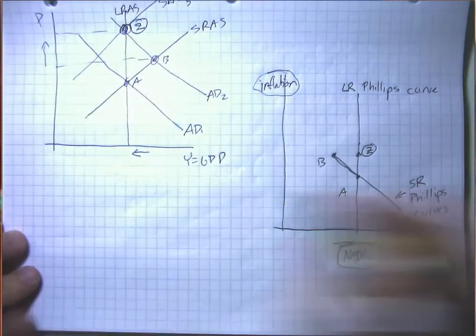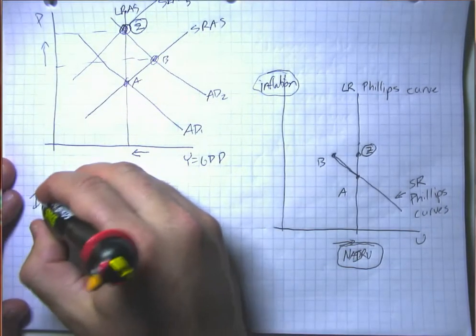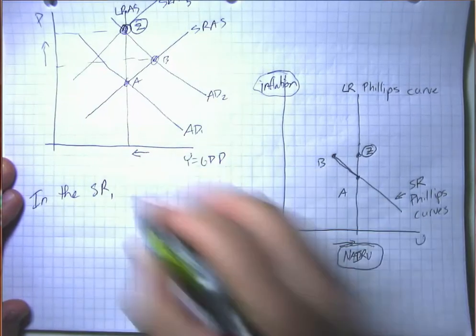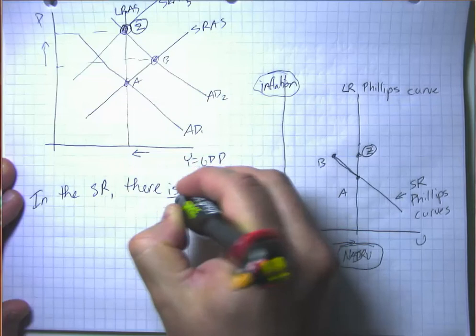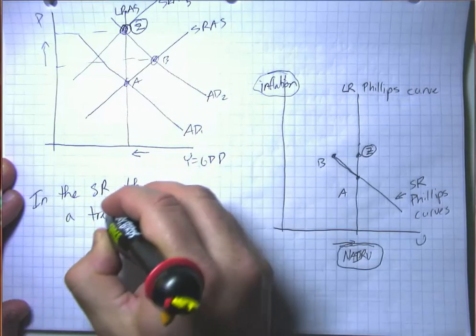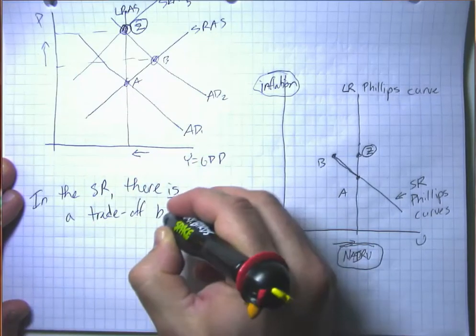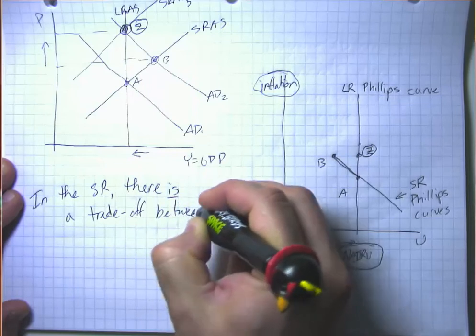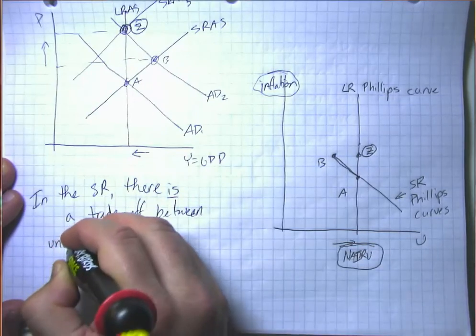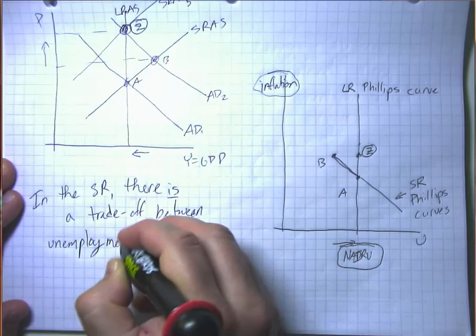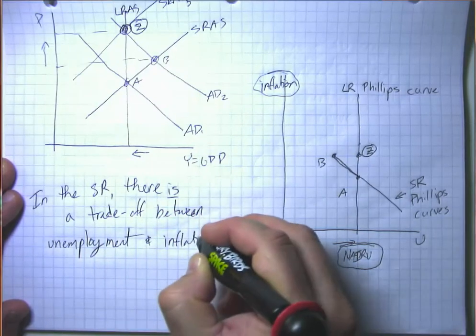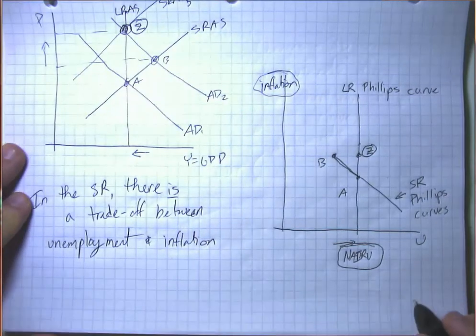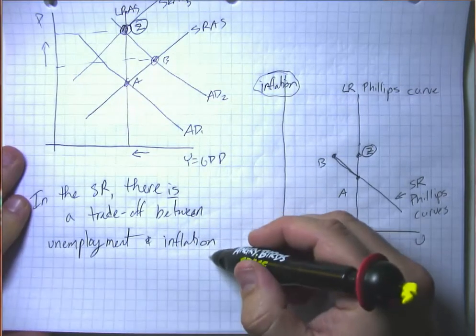So that's why we think that in the short run there is a trade-off between unemployment and inflation. The policies that will tend to push down unemployment will tend to push inflation up. The policies that will tend to push down inflation will tend to push unemployment up.